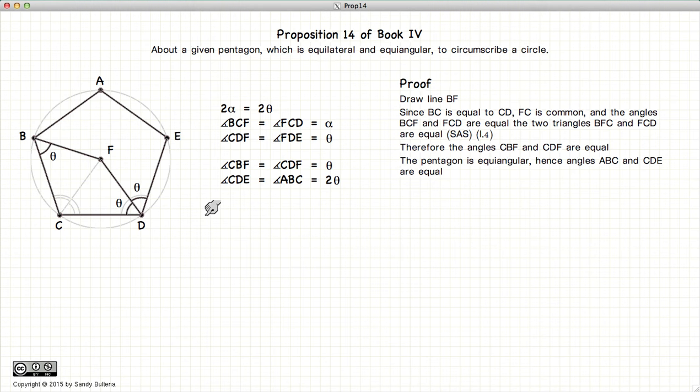Now since the pentagon is equiangular that means that the angle at abc is equal to this angle cde which is equal to 2 theta. Which means this angle here is equal to 2 theta which means bf has bisected b and that this angle here is equal to theta as well.